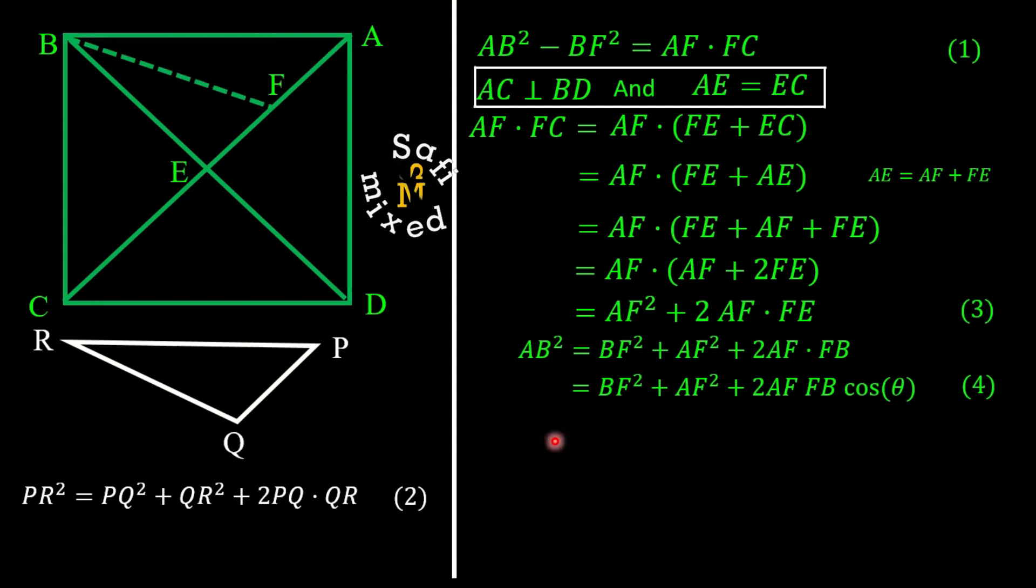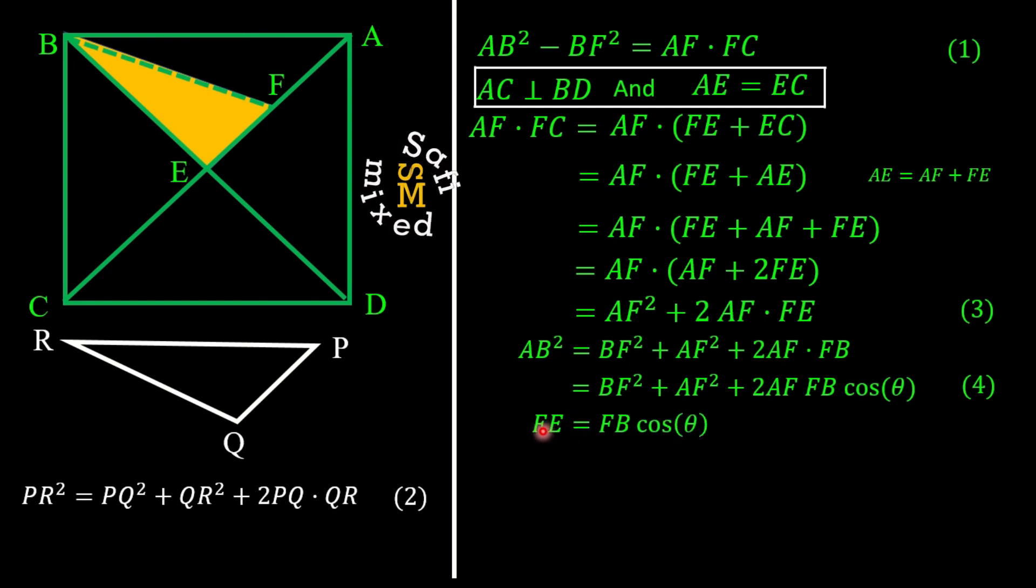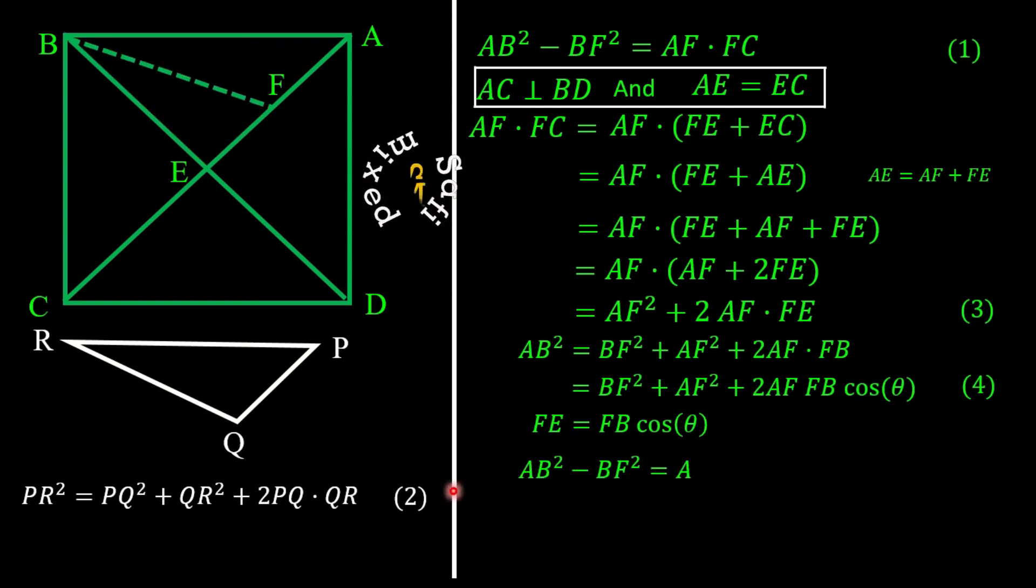Now with the help of triangle FEB we can establish this relation: the side length FE can be expressed as FB·cos(θ). In substituting this value in equation 4 we can put equation 4 into this form.